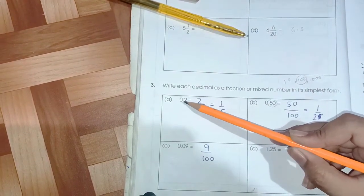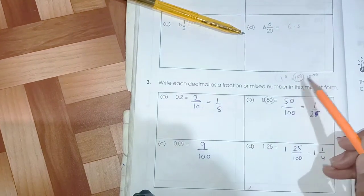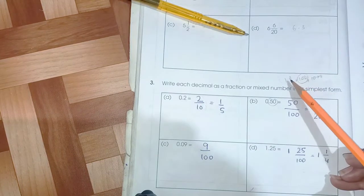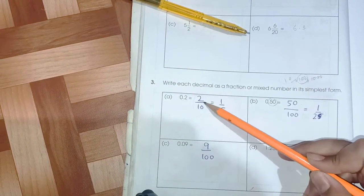Number one is 0.2. We have to take only 10, 100, or 1000 according to the numbers. We have two numbers only, it means we can take 10. Now 2 upon 10 is the simple fraction form.